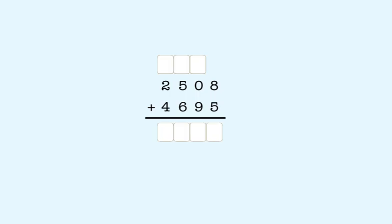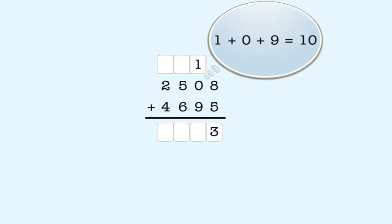Eight plus five is equal to thirteen. So we put the three in the ones column and make a ten. Then the tens place, one plus zero plus nine is equal to ten. So we put the zero in the tens column and make a ten.